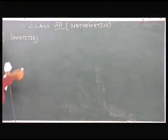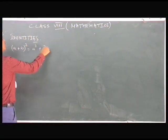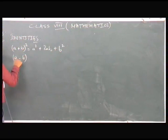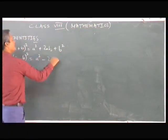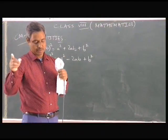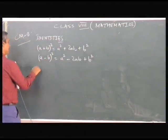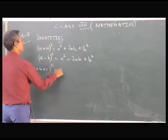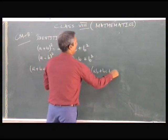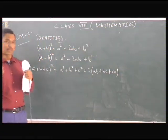We can also call these expansions. Like (a + b)² = a² + 2ab + b², and (a − b)² = a² − 2ab + b² — you remember these from Class 7. Also (a + b + c)² = a² + b² + c² + 2ab + 2bc + 2ca. These three identities or expansions you also know from Class 7.